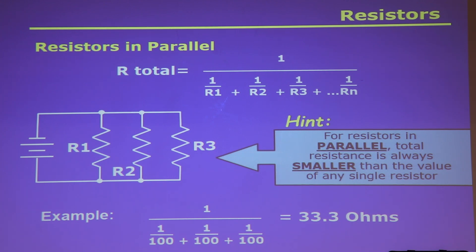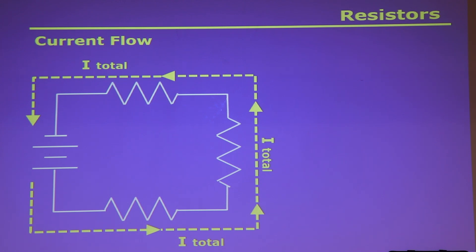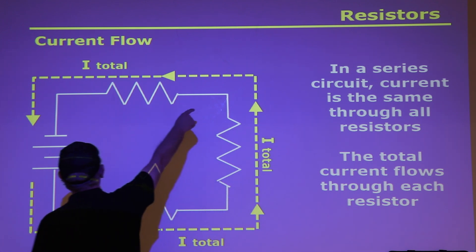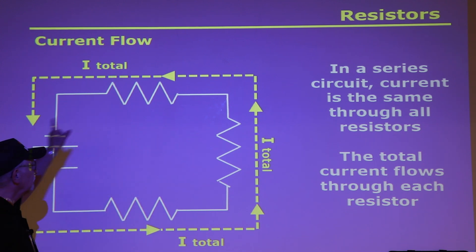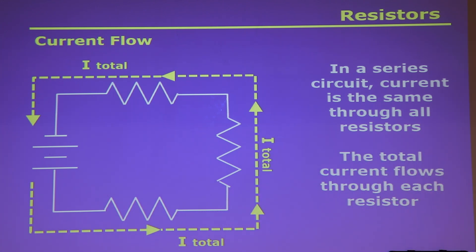Another quick test hint: before doing all the math on a parallel circuit, look at the answers — if three answers are larger than the smallest resistor, throw those out. In a series circuit, current is the same through all the resistors — the total current flows through each one. In a parallel circuit, the current divides among the resistors, proportional to their resistance values — the total current equals the sum of the currents through each branch.